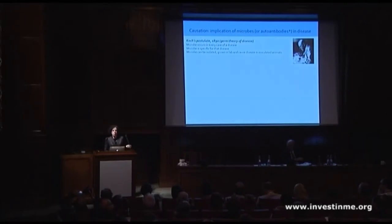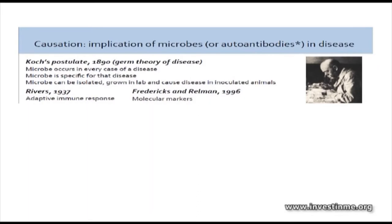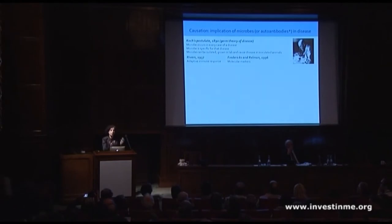It's a much more complicated scenario. We have to think about how the host response — the immune response of the host — which Rivers proposed as an adaptation in 1937, and also the fact that we can detect with exquisite sensitivity through PCR and molecular techniques. We can find even one sequence associated with a bacterium — it may not be culturable, it may not be able to be replicated anymore. Our sensitivity is that high.